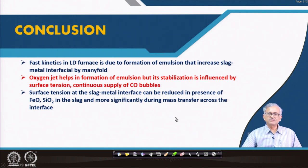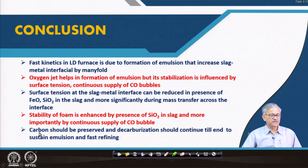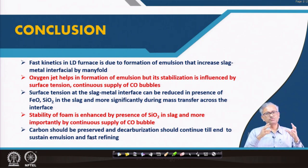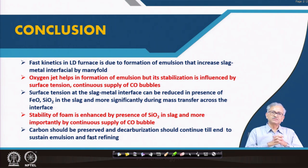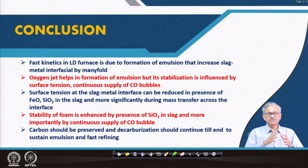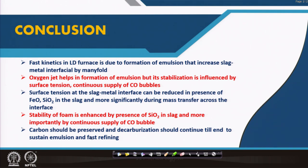The most important stabilizing factor is the continuous supply of CO gas bubbles — that is what sustains the foam and the emulsion. Therefore it is essential to preserve carbon to the end of refining. This is called the catch carbon technique — you must control the blowing practice so that decarburization continues efficiently to the end, keeping the emulsion stable and refining ongoing as long as the emulsion is stable. That is the essence of this lecture. Thank you very much.